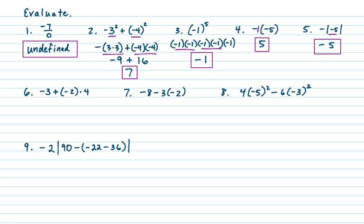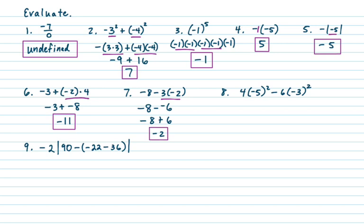On number six we have negative 3 plus negative 2 times 4. We multiply the negative 2 times 4 first, getting negative 8. So negative 3 plus negative 8 is negative 11. On number seven we have negative 8 minus 3 times negative 2. Do the multiplication first: 3 times negative 2 is negative 6. Subtracting negative 6 is the same as adding positive 6, so negative 8 plus 6 is negative 2. Alternatively, you can treat it as minus a negative 6 going directly to plus 6.